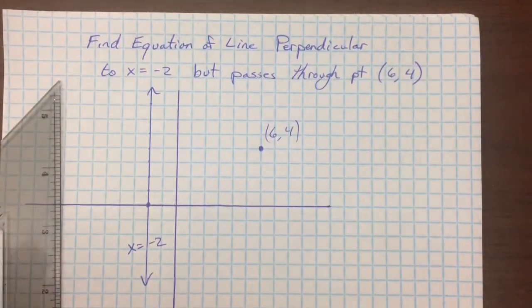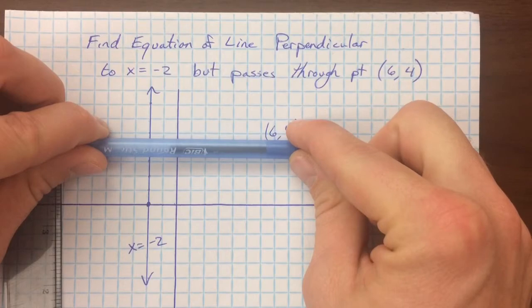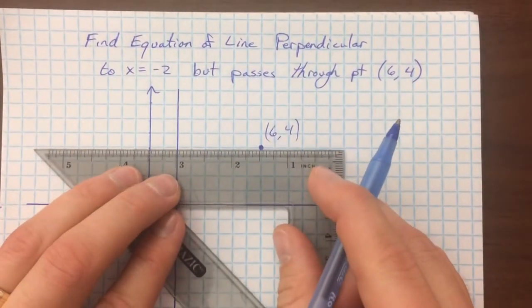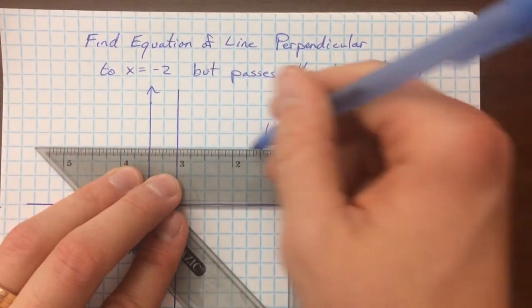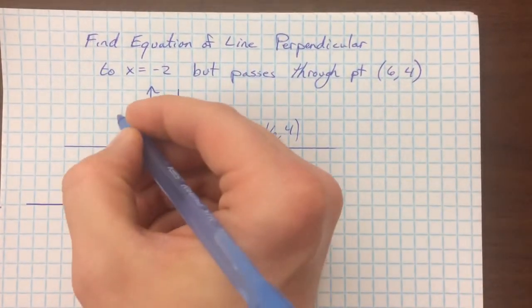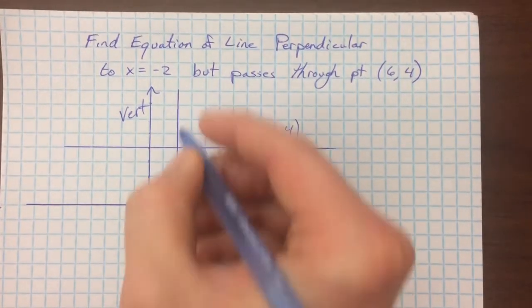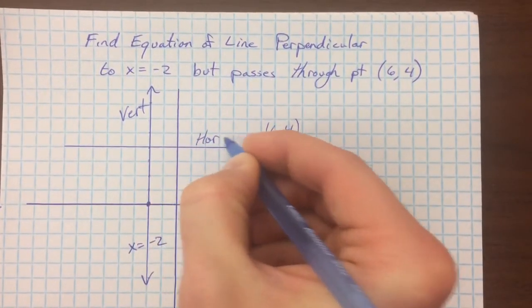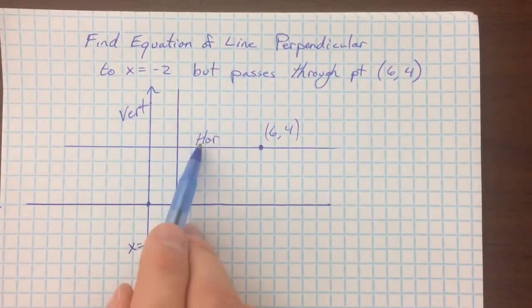So, if I want it to be perpendicular, I'm going to have to make a horizontal line. And so I'm going to make this line right here be horizontal. And so we're going from a vertical line to a horizontal line, because they're perpendicular to each other.